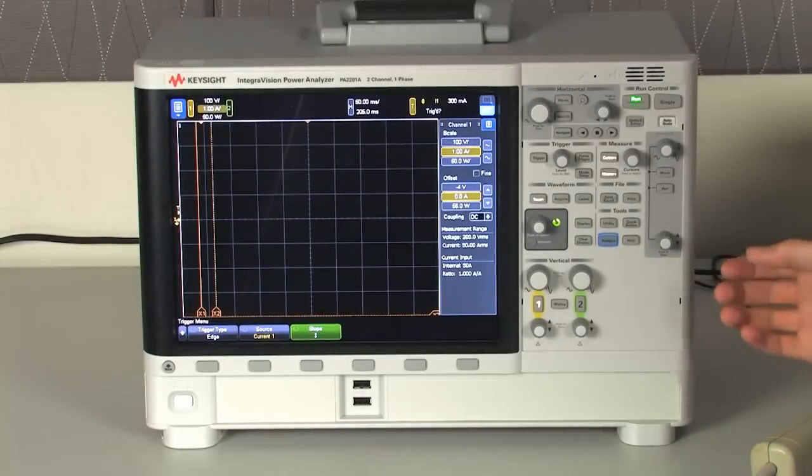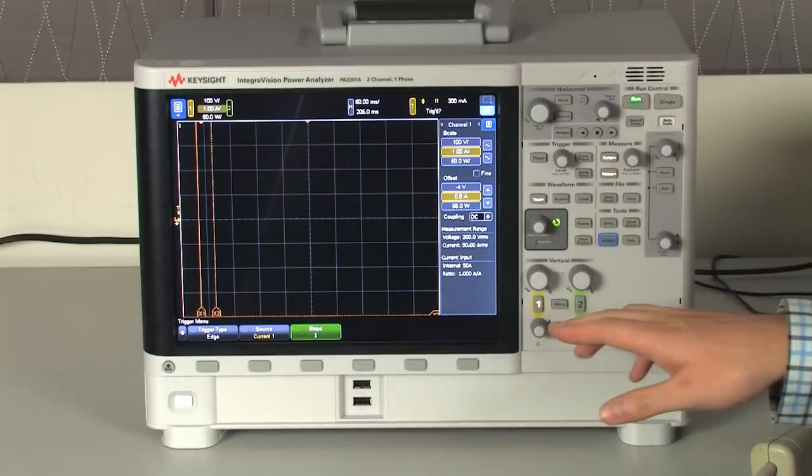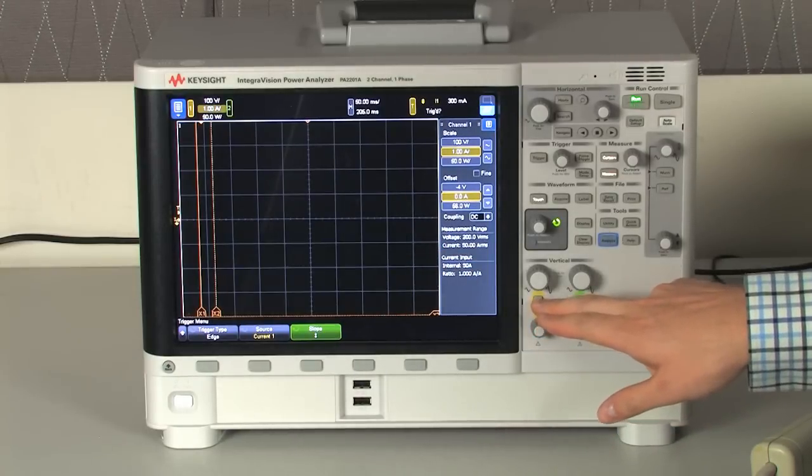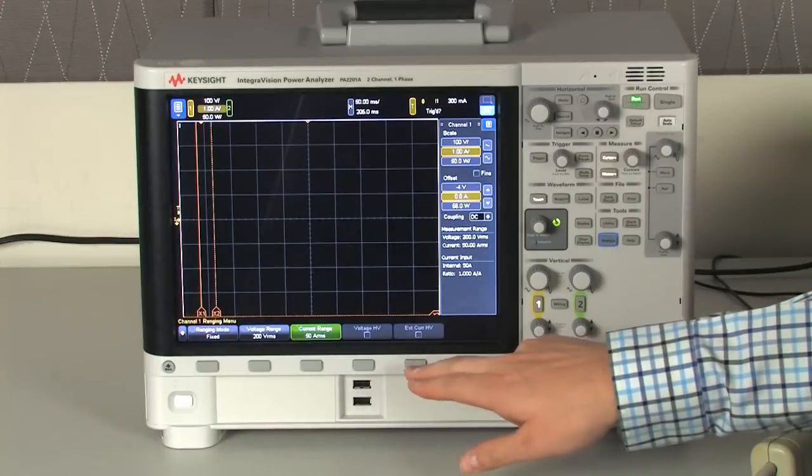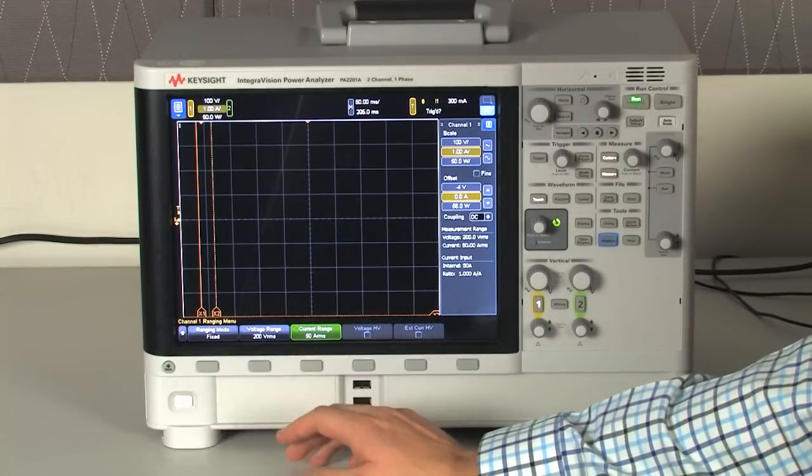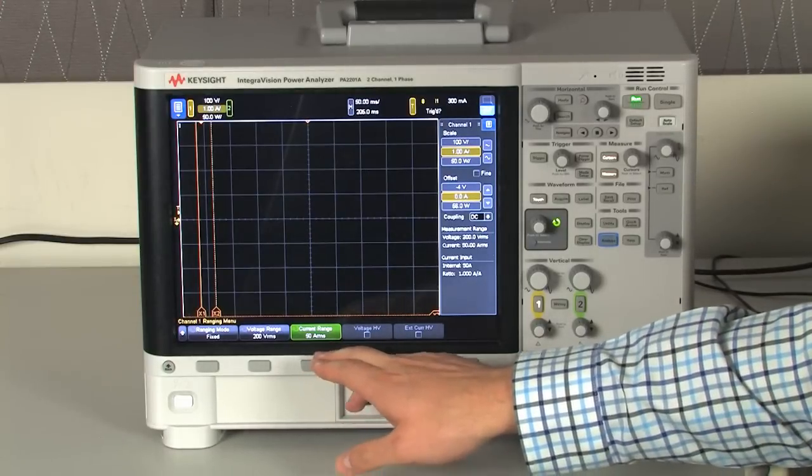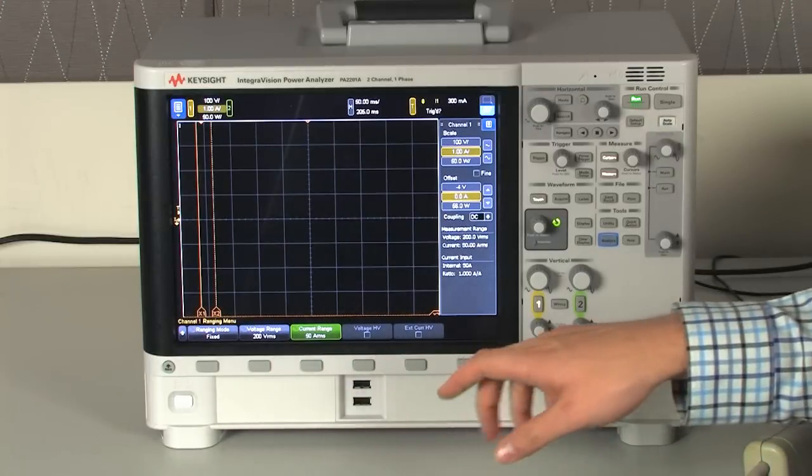Another unique feature about the IntegraVision Power Analyzer is its ability to measure transient events. We have a DC switching power supply hooked up to IntegraVision Power Analyzer. And now we're going to try to capture its inrush current. So I've already set the display to be just displaying current. Now I'm going to go into the channel 1 menu and set the ranging to fixed. This is important so we can capture the full peak of the inrush current. So I set the inrush to 50 amps and the voltage range to 200 volts.